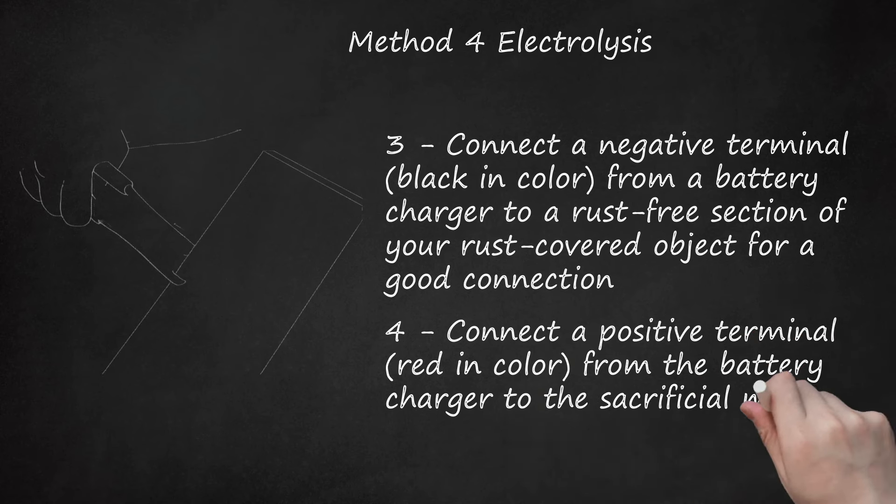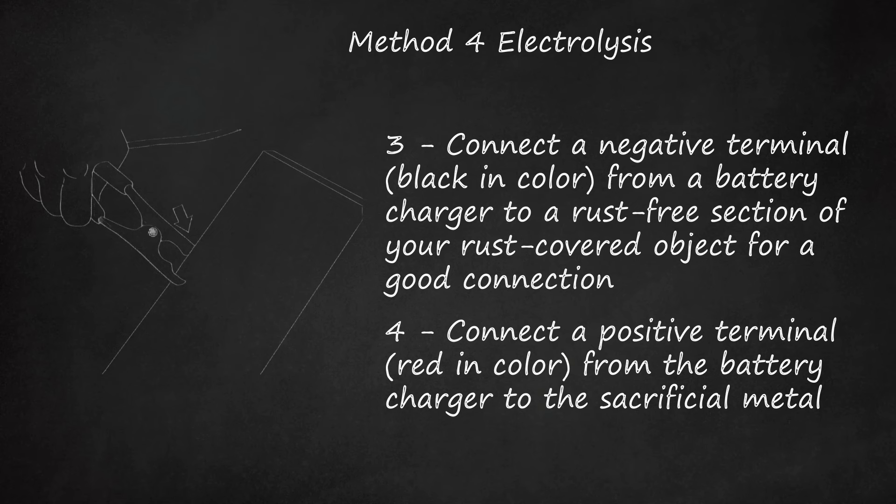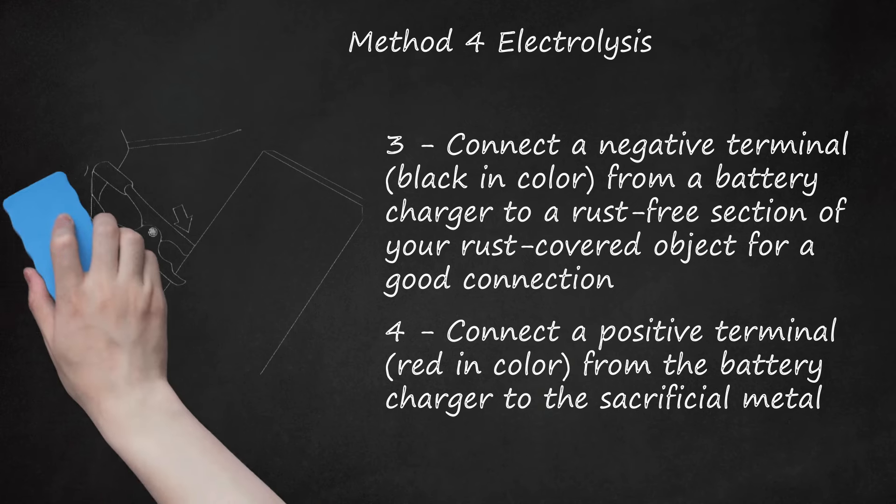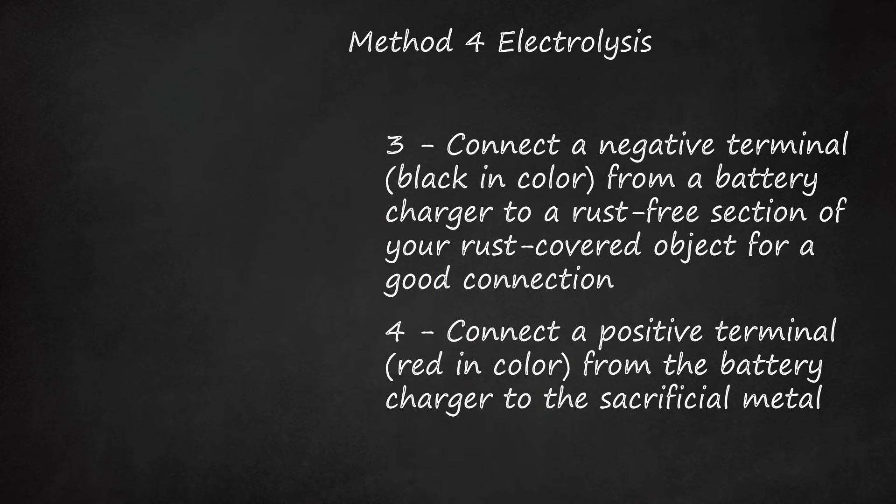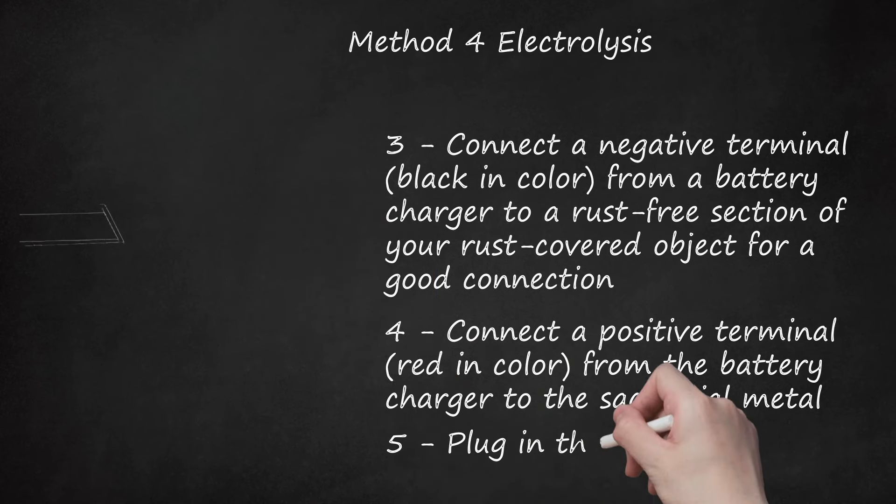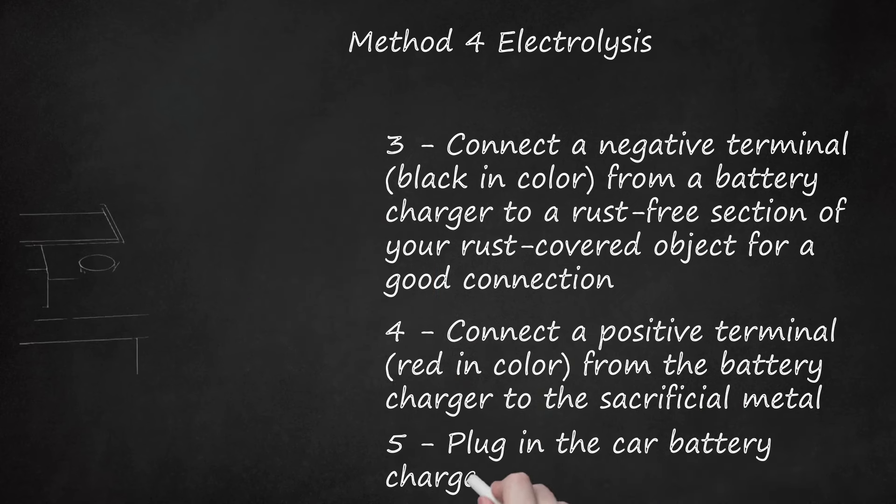Fourth, connect a positive terminal, red in color, from the battery charger to the sacrificial metal. Remember not to submerge the sacrificial metal completely, or you'll risk eating away at the positive terminal, which you don't want to be eaten away. If the sacrificial metal is completely submerged, consider using another wire as a mediator connection between it and the car battery charger lead to keep the charger terminal and connection dry.